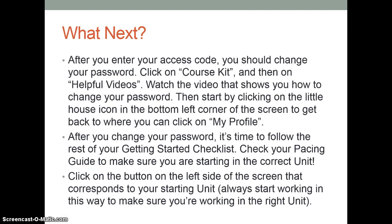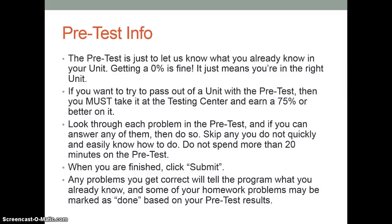Or if you wrote it down, type it in. After you enter your access code and successfully go back into your course, follow the steps to change your password — there's a video for how to do that under course kit on the left-hand side of your screen in MyLabsPlus. When you've changed your password, you're ready to keep working through your getting started checklist, which is posted in Blackboard under course documents or in MyLabsPlus under course kit. Make sure you're starting on the right unit — your pacing guide will indicate which units you're completing this semester. Start with the first unit listed, click the button on the left-hand side of the screen to go to that unit. The first thing everybody needs to do is a pretest.